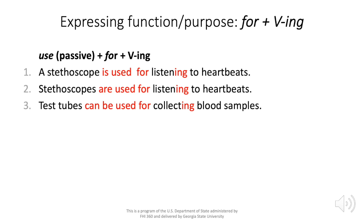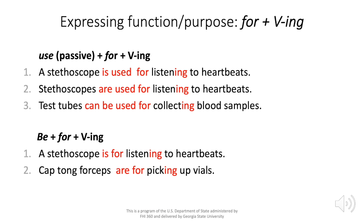The second pattern is 'be' plus 'for' plus the -ing form of the verb. Two examples: 'a stethoscope is for listening to heartbeats' and 'cap-tongue forceps are for picking up vials.'